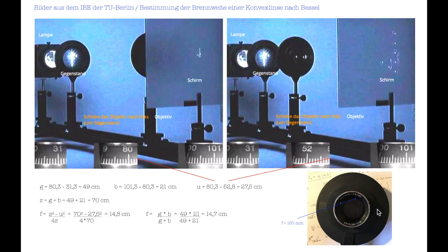Das verwendete Objektiv ist unten fotografiert – es hat die Brennweite 150 mm. Wir liegen 2 mm daneben, also ein relativ guter Wert. Hier ist nochmal die Brennweite nach der Linsengleichung berechnet, da ergibt sich 147 mm.